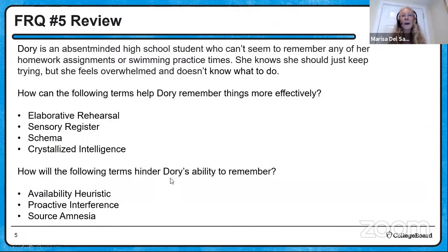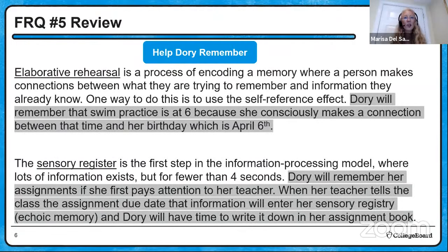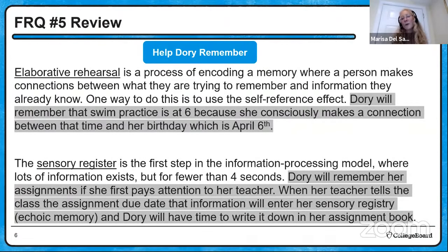Moving on to the review of the FRQ Dr. Swope gave you — it was all about Dory, an absent-minded high school student who can't seem to remember anything. You had four terms to link to how they would help Dory remember, and three terms for how they would hinder her memory. Starting with elaborative rehearsal: when you try to make sense of information by connecting it to something meaningful, using the self-reference effect. Dory will remember swim practice is at six because she consciously connects that time to her birthday, which happens to be April 6th.